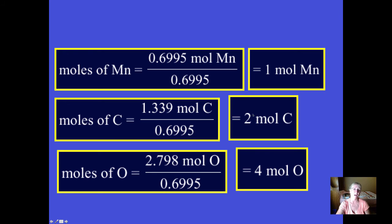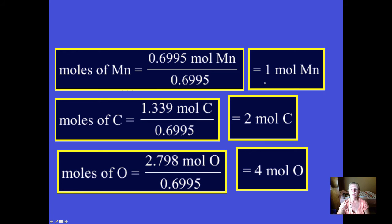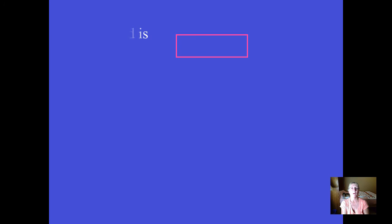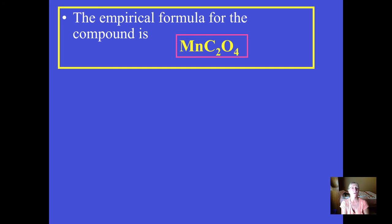Sometimes you'll see 1.99, 1.95 — call that 2. Maybe 4.01 or 3.92 — it's okay to call that 4. At a certain point it's reasonable to round to the nearest whole number, and now you have the subscripts — the small numbers that go to the bottom right of each element symbol in the formula. So we have one manganese, two carbons, and four oxygens in this compound, which is called manganese oxalate.